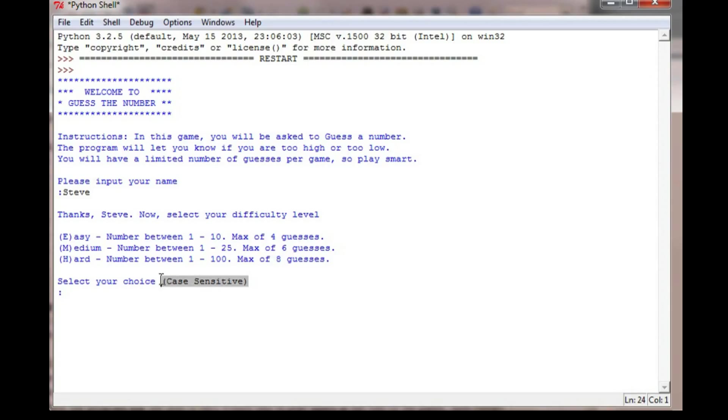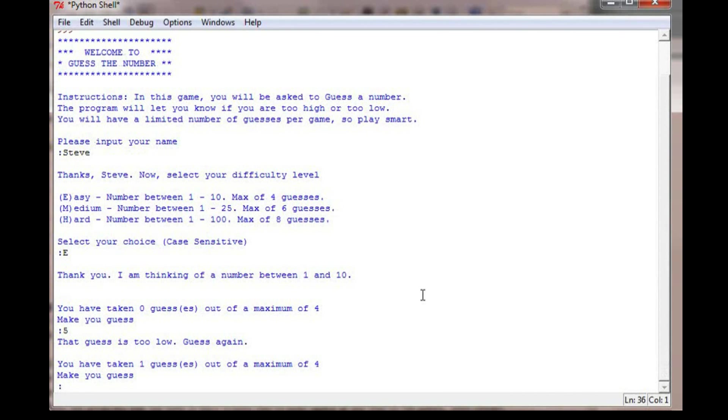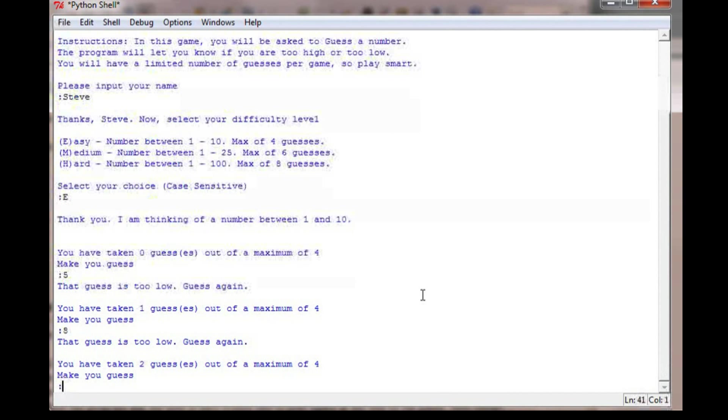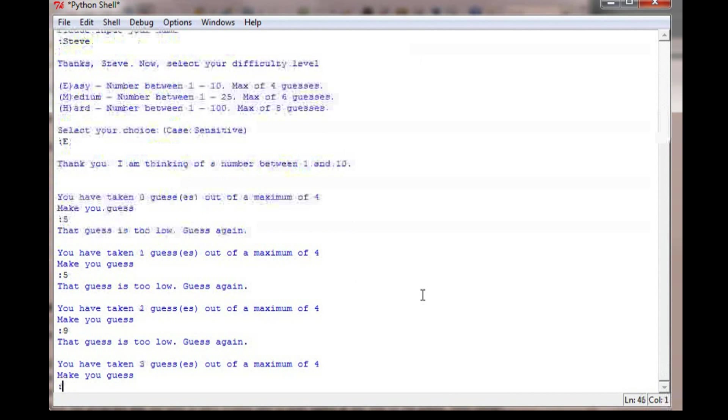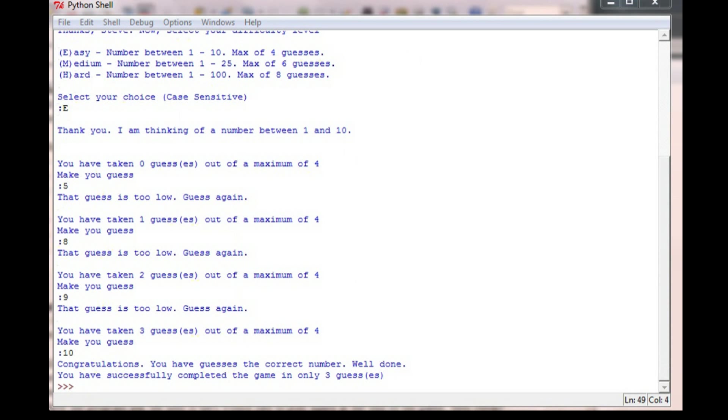I haven't shown you how to do error checking yet, so right now this is case sensitive. If they use a lowercase e, m, or h, it won't work. So thank you. I'm thinking of a number between 1 and 10. You have 0 guesses out of a maximum of 4. Make a guess. I'm going to guess the number 5. That guess is too low. Guess again. So it's got to be above 5. So let's go with 8. That guess is too low. Guess again. Let's go with 9. That guess is too low, so I'm going to guess 10. Congratulations, you have guesses. Well, look at that grammar error. I might have to do some checking for bugs in this version of the program because it's clearly not ready for release. You have guessed the correct number. Well done. You have successfully completed the game in only 3 guesses.